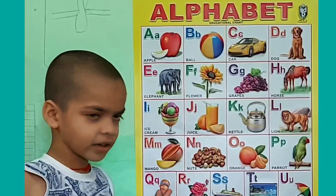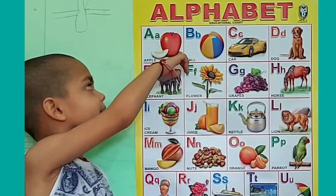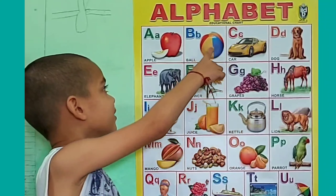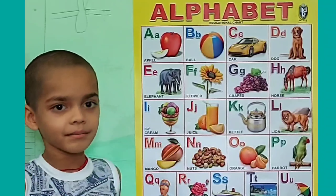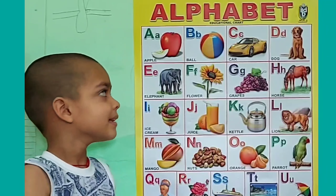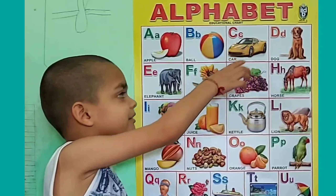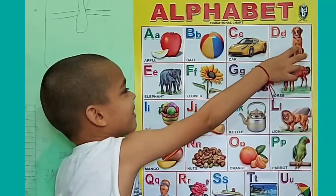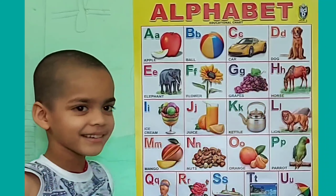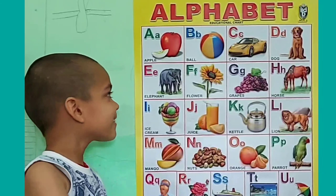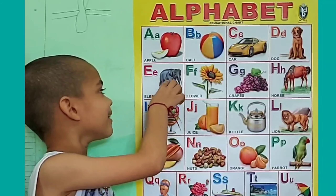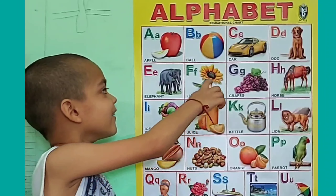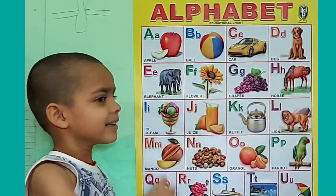A for apple, B for ball, C for car, B for dog, E for elephant, F for flower.